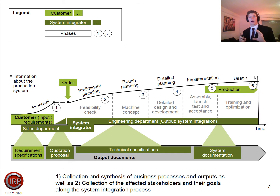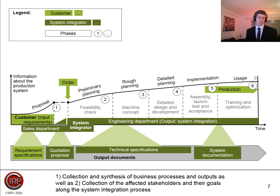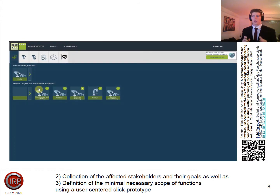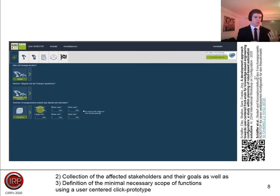The next step is that within this context, you also have to understand the processes and the output documents. We analyzed this based on literature and expert interviews to get an idea of what functionality the configurator should have. We focused just on the first phases — proposal and primary planning — and within that scope, we needed to define precise functionality. Therefore, we developed a Qlik prototype to condense the ideas.